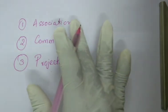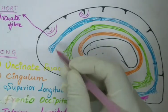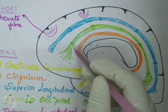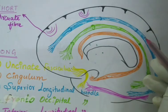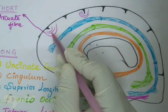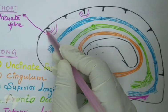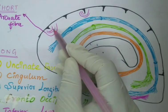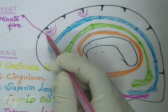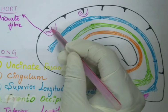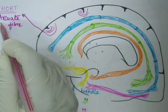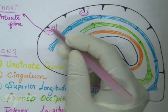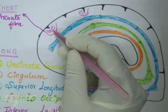First, we will study about the association fibers. Association fibers connect different regions of the cerebral hemisphere. These are all the association fibers which connect different regions of the cerebral hemisphere. Association fibers can be classified into two types depending on their length. The first one is the short association fibers, which connect the adjacent gyri around the sulcus. Since they arc between the two gyri, they are otherwise called arcuate fibers, connecting related functional areas like the primary motor cortex to the premotor area.